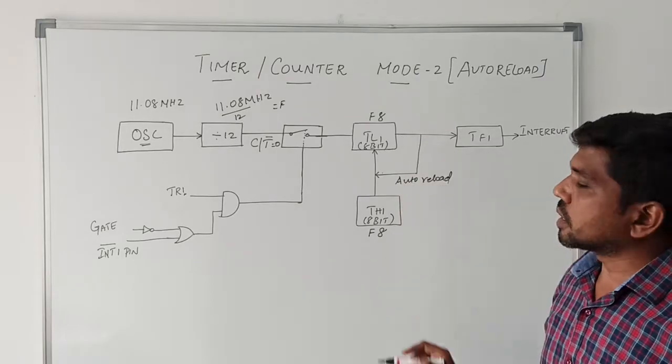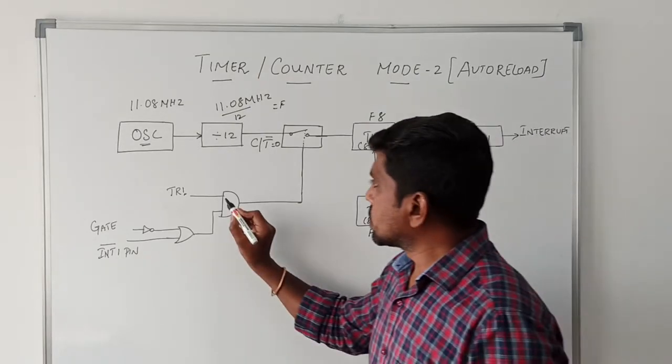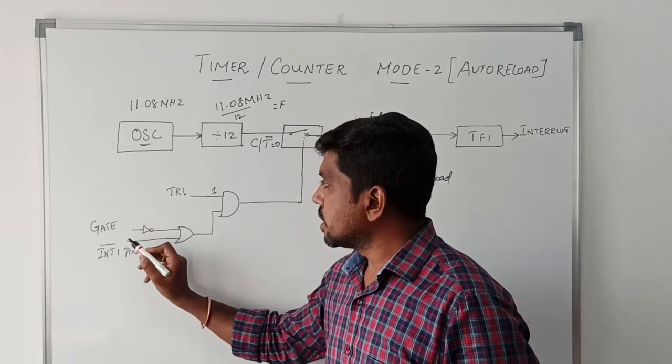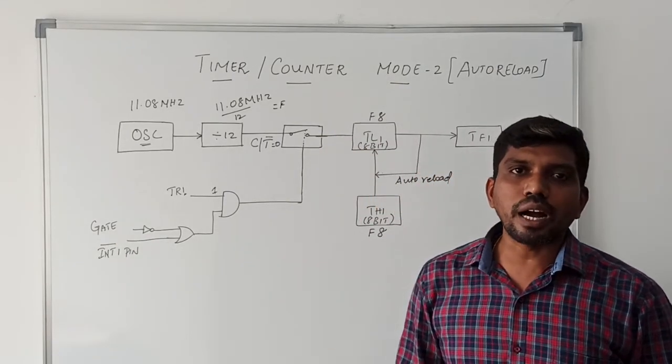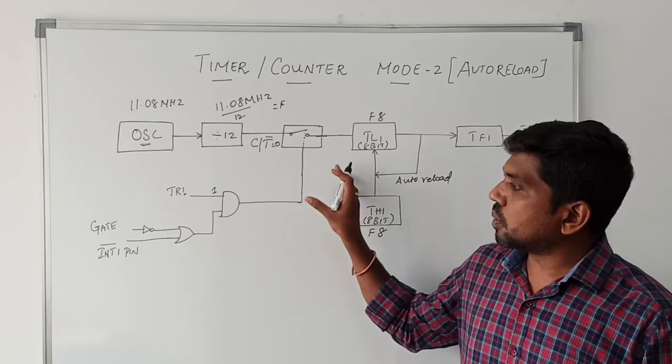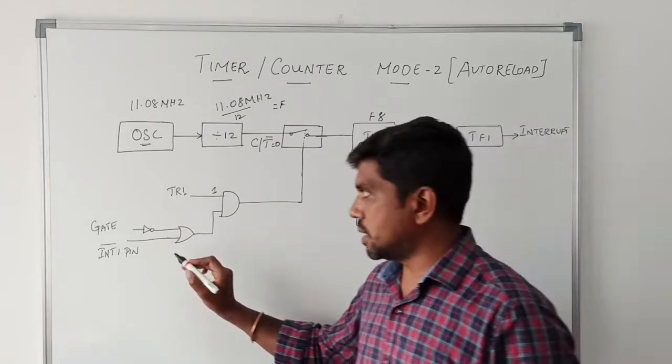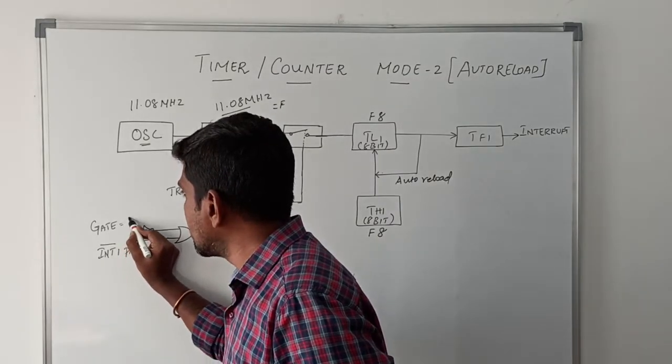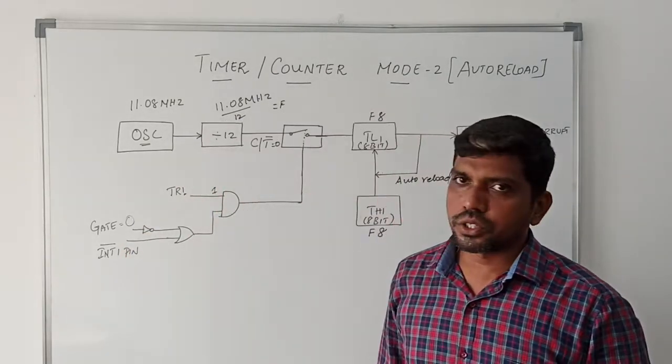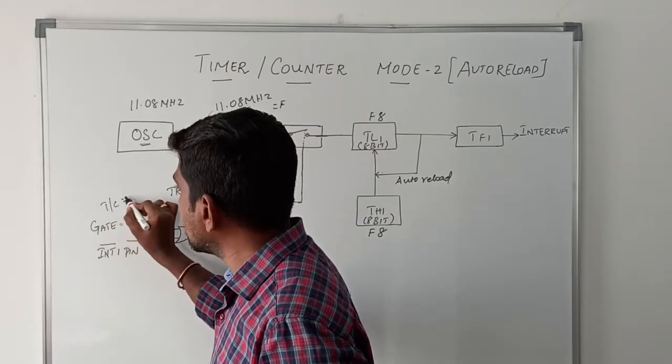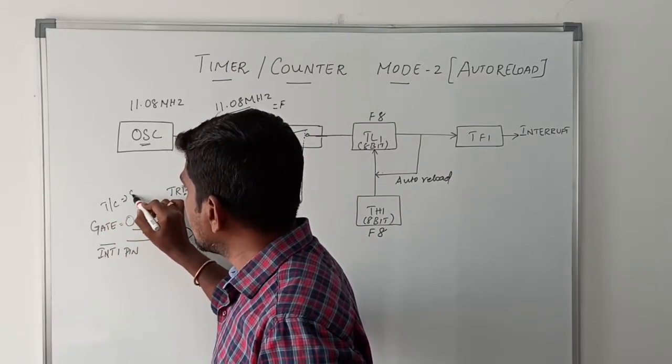If this value equals 1, then the next control signal is Gate. Gate is mainly used to identify whether the timer counter circuit is triggered by software or hardware. Here let us consider the gate value is 0. Gate value is 0 means the timer counter circuit is activated by software.